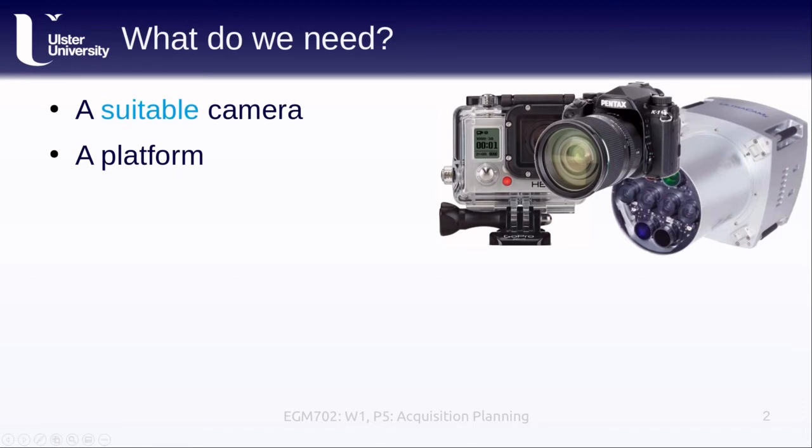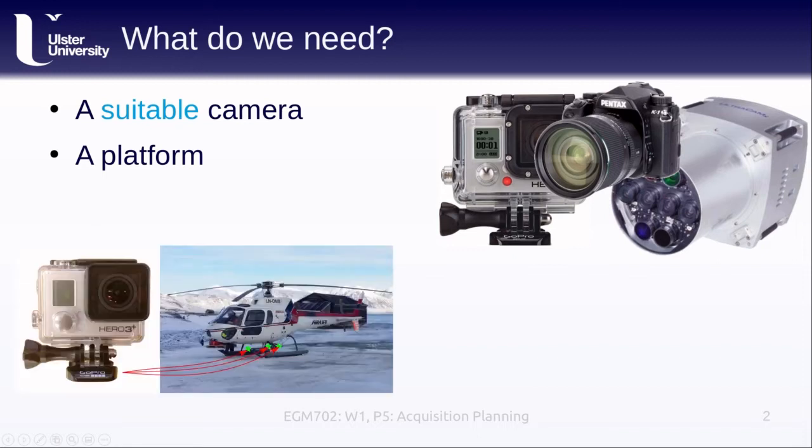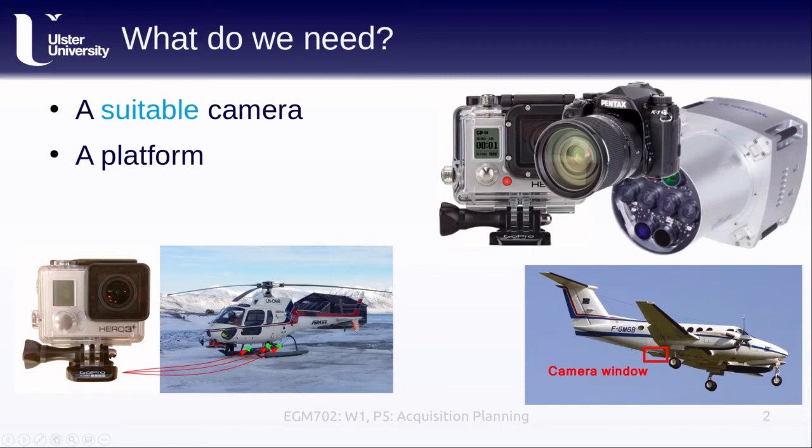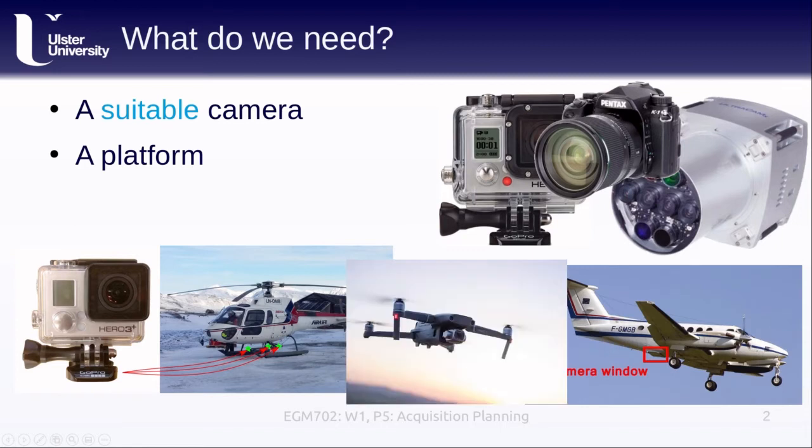We also need a platform. We need something to put the camera on to go out and take our photos. This might be a helicopter if we have access to one. If we're doing photogrammetric mapping surveys, we might use a mapping plane like the one shown here. More likely, we're going to use a drone like the one that you can see here, or an unmanned aerial vehicle, a UAV.